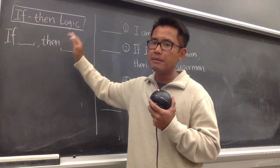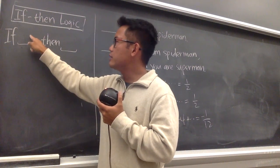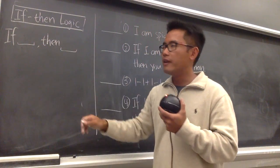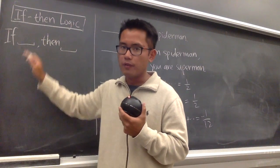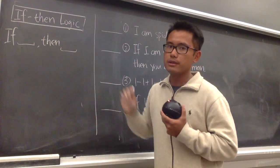I will have to first go over the if-then statement for you guys. So whenever you have an if-then statement, this right here is called the condition, and this right here is called the conclusion. And for the condition, it can be either true or false. And for the conclusion, likewise, it can also be true or false.